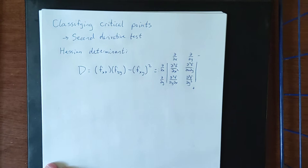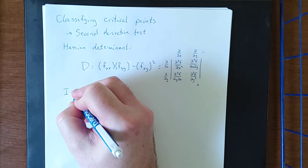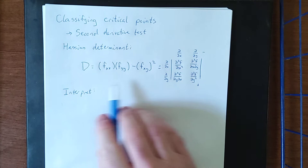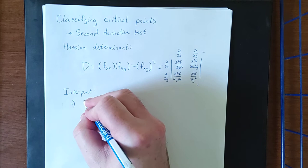Now we can use this to classify any critical point that we have. Next up of course would be the interpretation of this. So we find our critical points, we find d, and we plug the critical points into d.